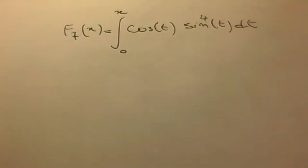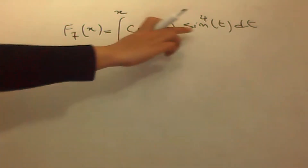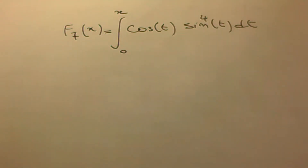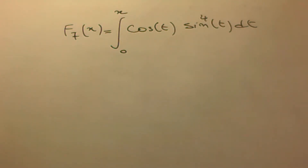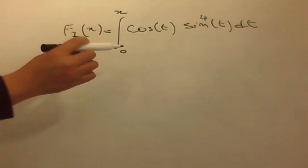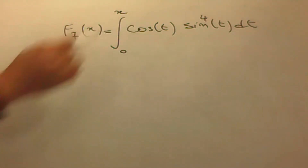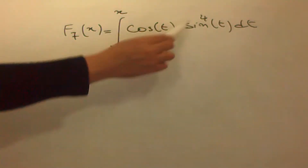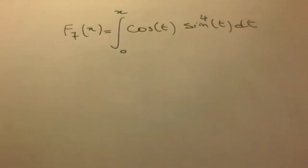Maintenant on va intégrer cosinus de t fois sinus puissance 4 de t dt. Quelle est la méthode la plus appropriée ? C'est la méthode par changement de variable. À votre avis, pose-t-on u égal à cosinus ou bien à sinus ?